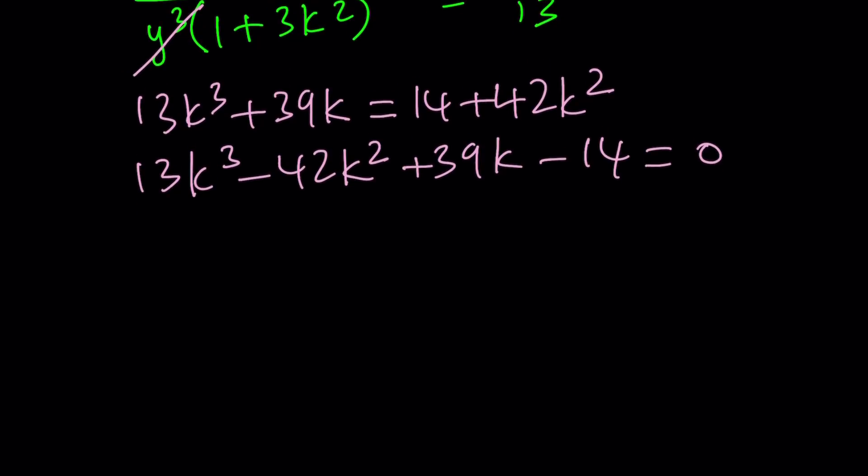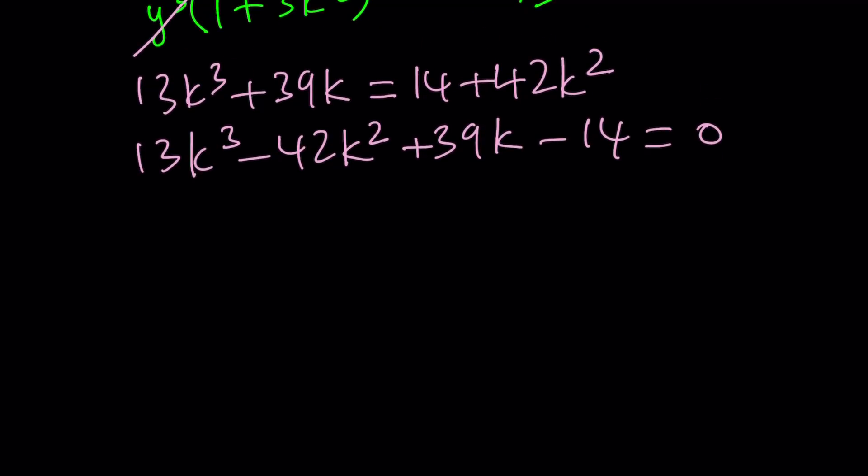You know, one of the things that we always check first is the sum of the coefficients. If the sum of the coefficients is 0, then 1 is a solution. Let's go ahead and check it out. 13 plus 39 is 52, but 42 plus 14 is, well, negative 42 plus negative 14 is negative 56. So their sum is not 0. So k equals 1 does not work.